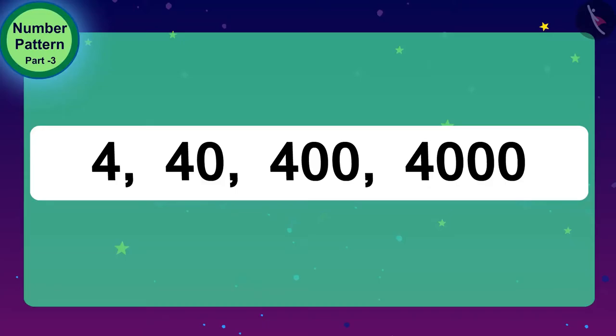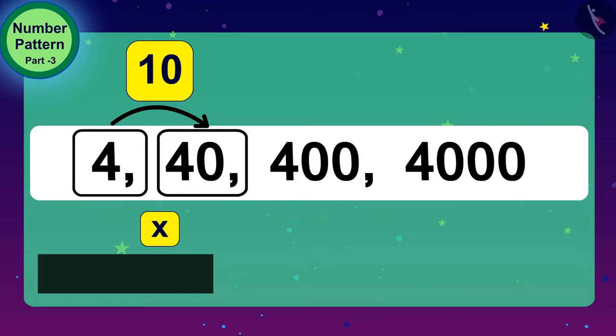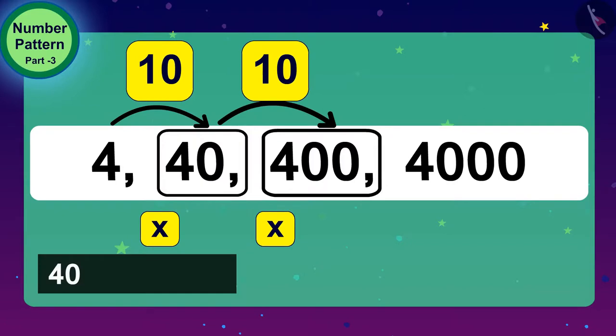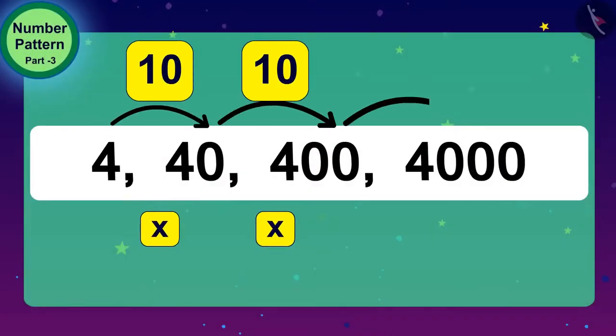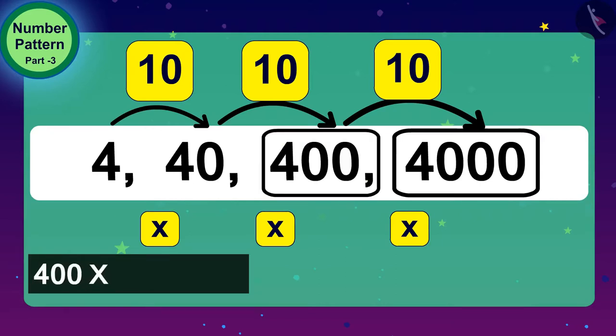The first number here is 4 and the next number is 40. If we use the process of multiplication, we will find what we need to do to get the number from 4 to 40. Exactly! We have to multiply 4 by 10. Let us now look at the next number, 400. What do we have to do to get a number from 40 to 400? Yes! 40 has to be multiplied by 10 once again. Oh wow, children! We have found the rule of this number pattern. To get the next number here, we are multiplying the number before it by 10.